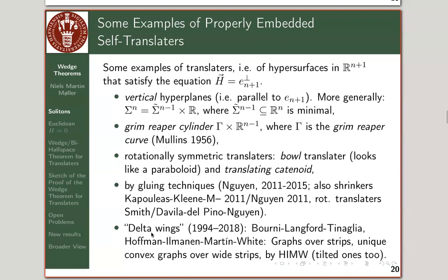There's also the story of delta wings, studied by several teams: Bernstein-Langford-Tinaglia, and Hoffman-Ilmanen-Martín-White. They constructed so-called delta wing solutions, which are graphs over strips — in fact, the unique graphical solutions over wide strips.